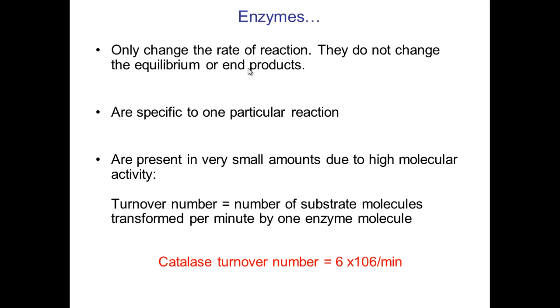For instance, if you have the breakdown of starch into glucose, the enzyme will not change the actual end products. It will only ever speed up the reaction. They are specific to one particular reaction. This is down to their specific tertiary structure, and they are present in very small amounts due to high molecular activity. That means you only need a very small amount of them to get this huge marked effect.